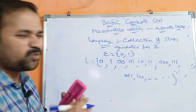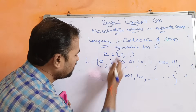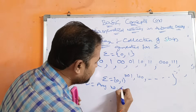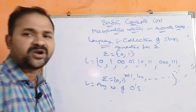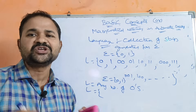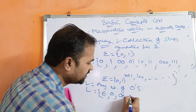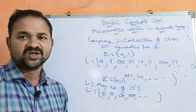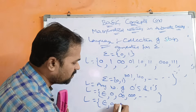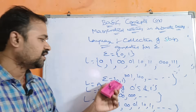Let us see more examples on language. If sigma = {0, 1} and the language is any number of zeros, then L = {epsilon, 0, 00, 000, ...}. If the language is any number of zeros and ones, then L = {epsilon, 0, 1, 00, 01, 10, 11, 010, 101, ...} — we can write any number of strings generated from 0 and 1.